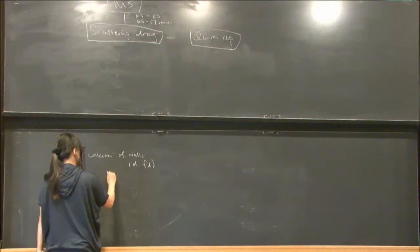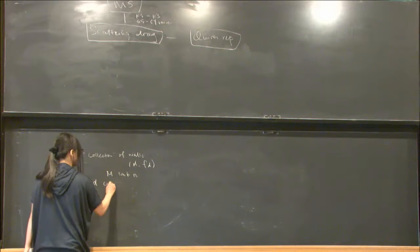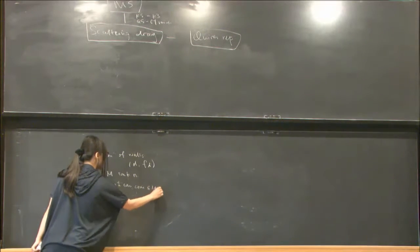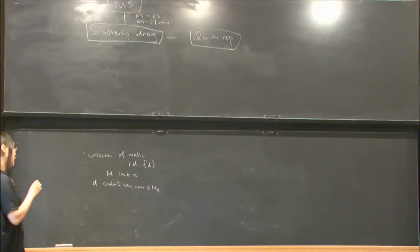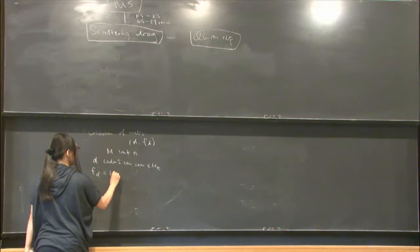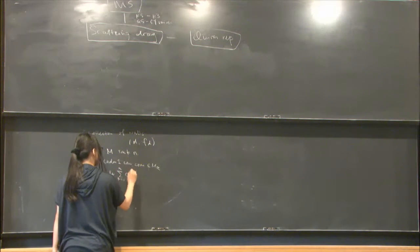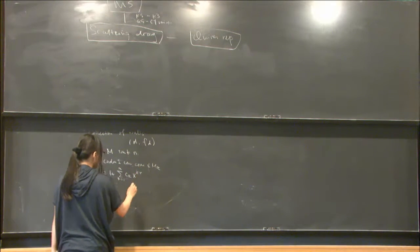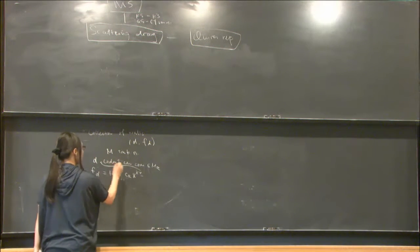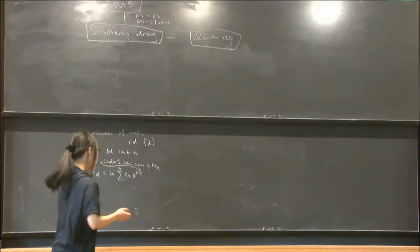First of all here, I fix a lattice M of rank n, and then I have my D is a co-dimensional one convex polyhedral cone in M_R, where M_R is simply M tensor over R. And f_D, to make things simple, f_D is 1 plus some polynomial series to infinity, x^{k_R}.